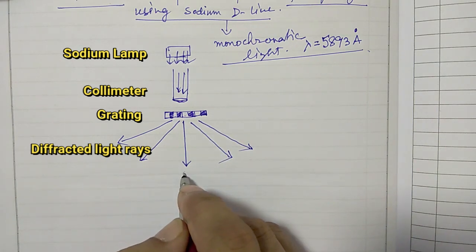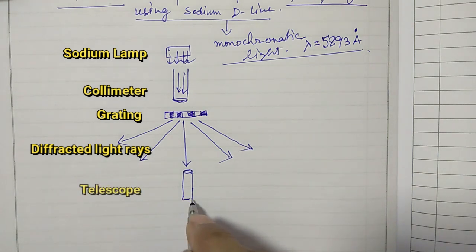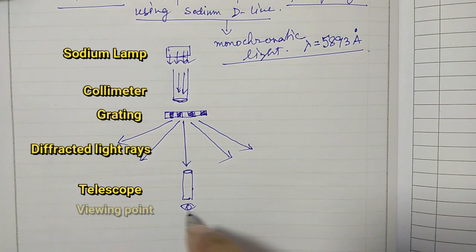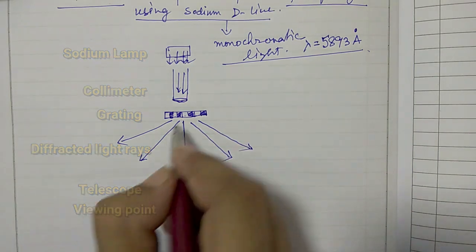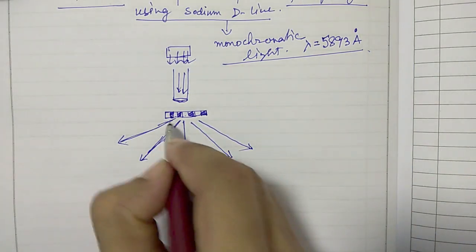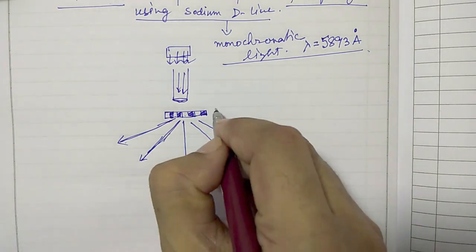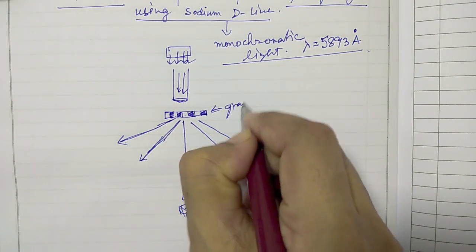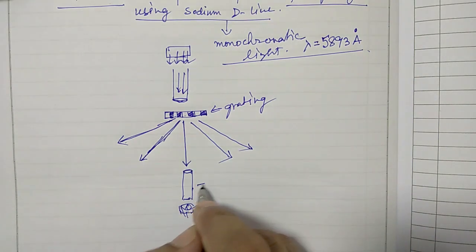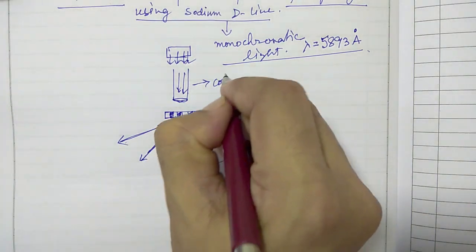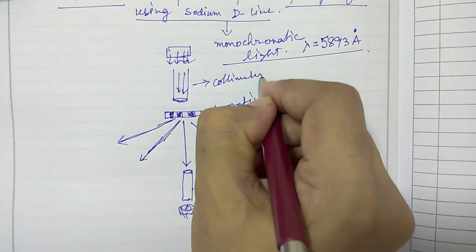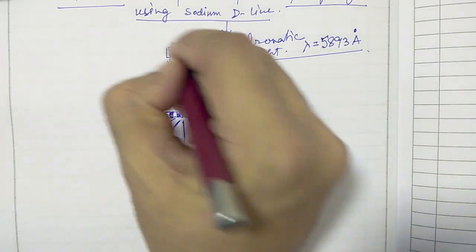We have our telescope here and then we look at the telescope and try to find out where are these rays that are getting diffracted from the grating. This is your telescope, this is collimator, that is sodium lamp.